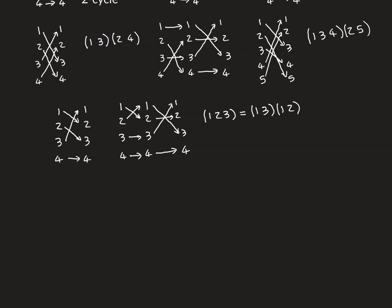The next important concept is that any permutation can be broken down into a composition of 2-cycles, or transpositions. Take the 3-cycle (1 2 3): we can break this down into two transpositions. We view the transposition (1 2) happening first, followed by (1 3). Composing them: 1 goes to 2, which goes to 2, so 1 goes to 2; 2 goes to 1, which goes to 3, so 2 goes to 3; and 3 goes to 3, which goes to 1, so 3 goes to 1. The composition of these two transpositions produces the 3-cycle.